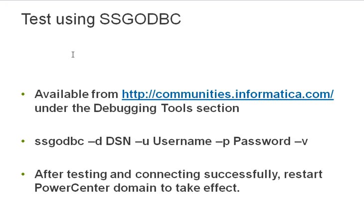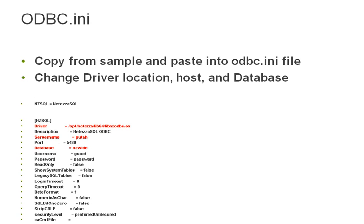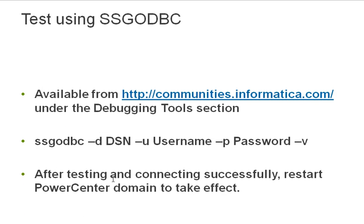So you're all ready to test using SSG ODBC. It just works like this: SSG ODBC minus D, DSN. The DSN is in your ODBC.INI — in my case, DSN is NZSQL in caps. Then U for username, P for password, and V is for verbose output. If you get any errors here, definitely give us a call and we'll be able to figure out what next steps to take based on the error and based on your environment variables and ODBC.INI.